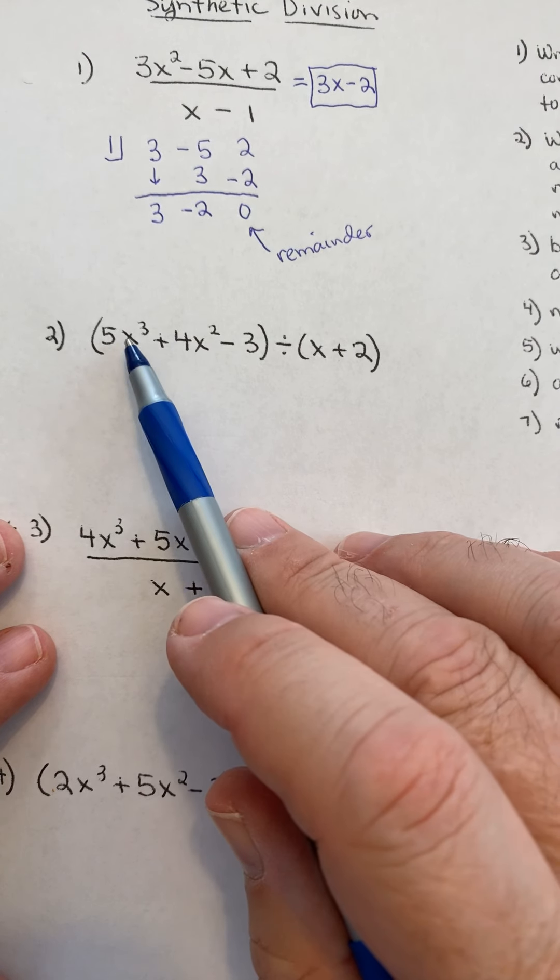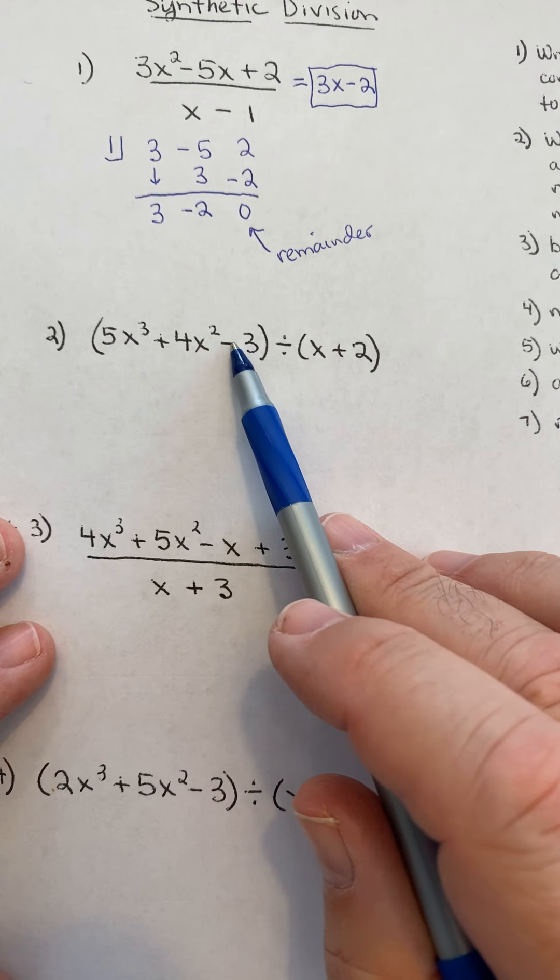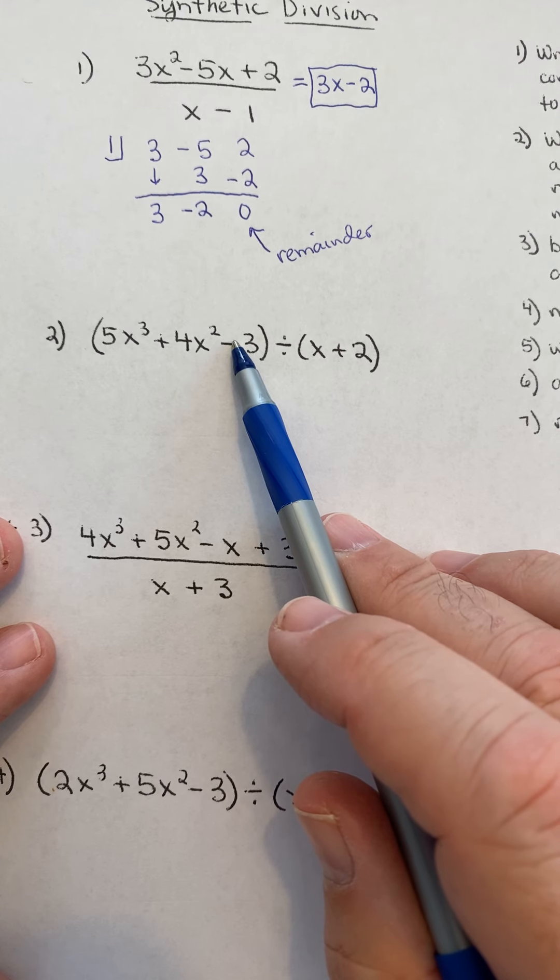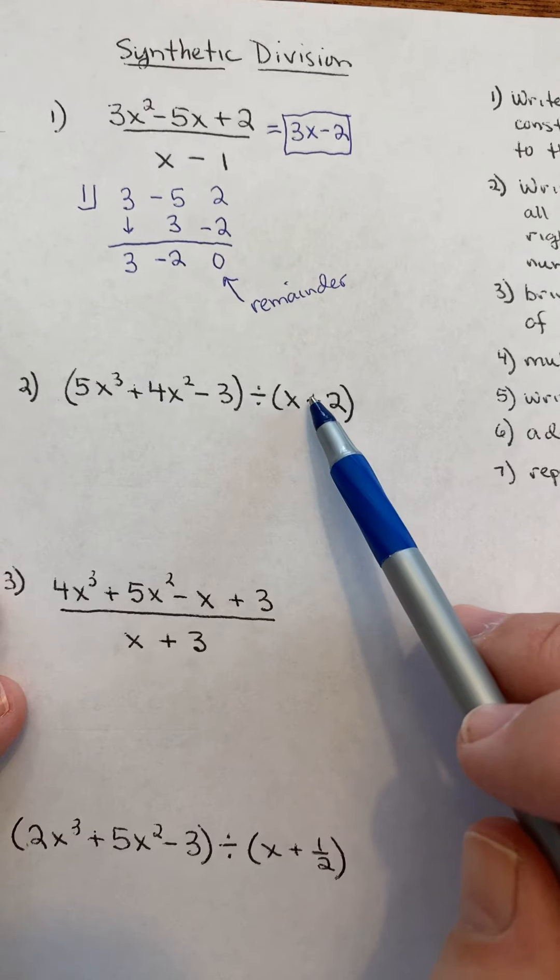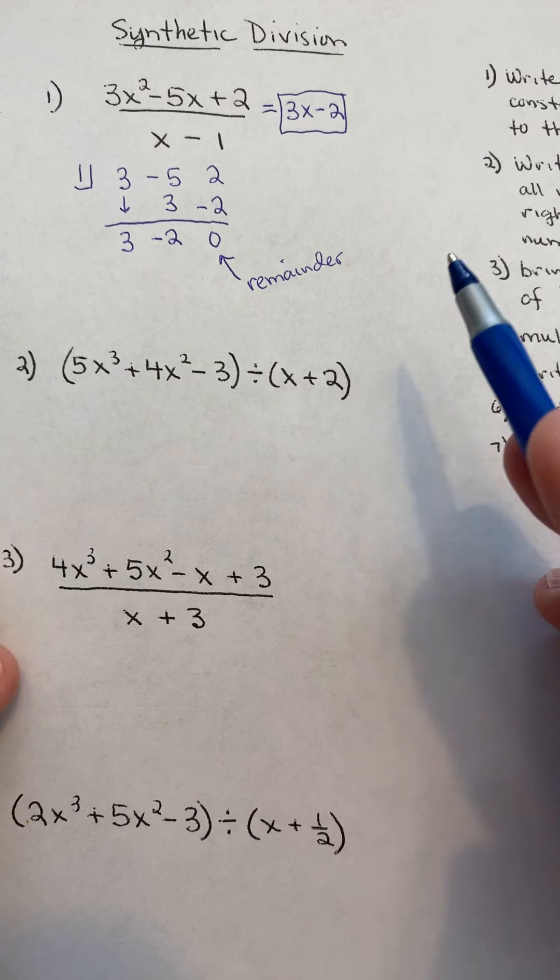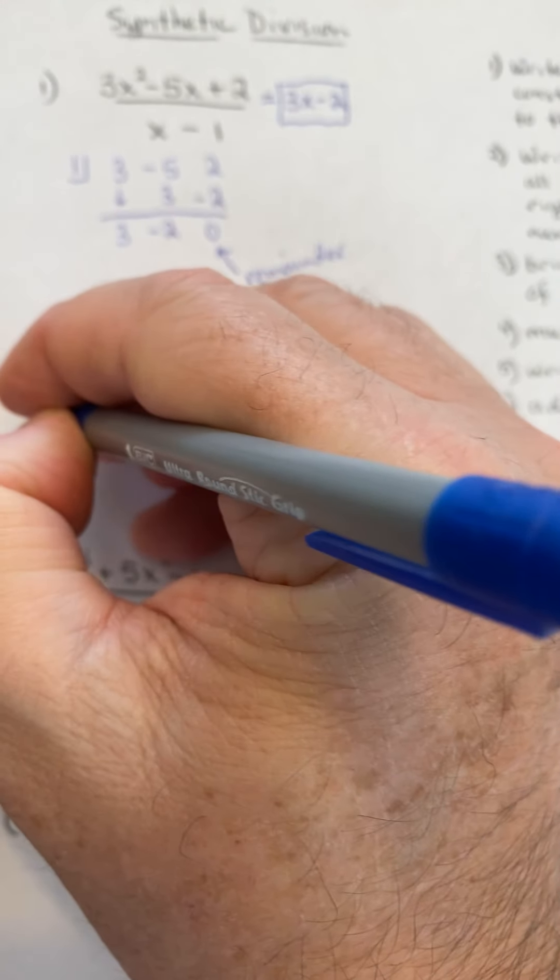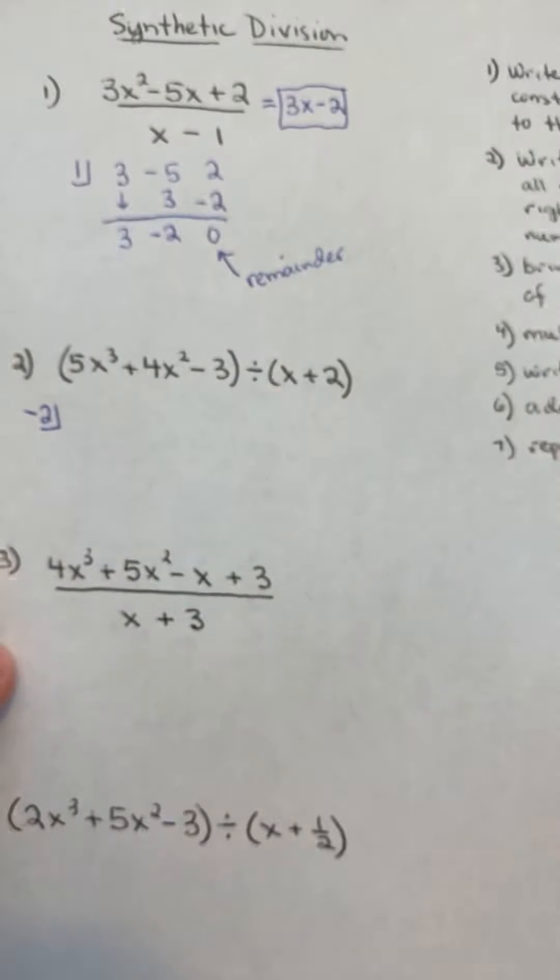So the next one. And notice at this problem, the X to the first is missing. Very important. Okay. Step 1. Write the opposite of the constant in the divisor. Here's the divisor. Opposite of plus 2, the negative 2. Put that over to the side.